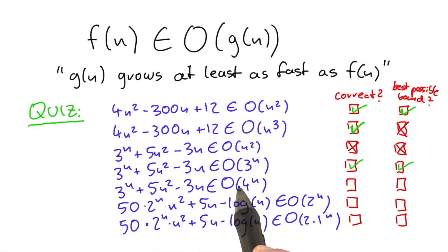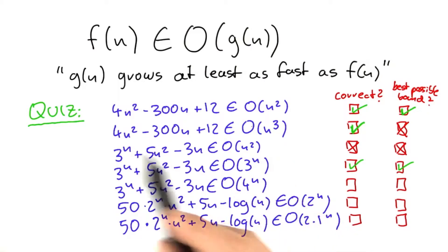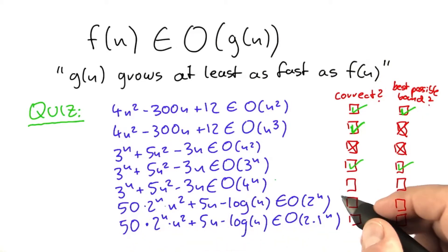The next one, again, the bound is correct. This is similar to here when we compared n to the power of 3 to n squared. So 4 to the power of n grows much faster than 3 to the power of n. But again, it's not the best possible bound because we already know that 3 to the n is the best possible bound that we can give.